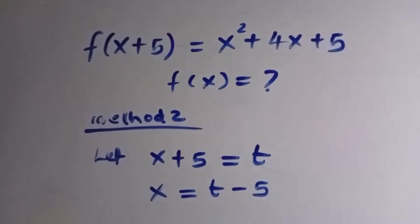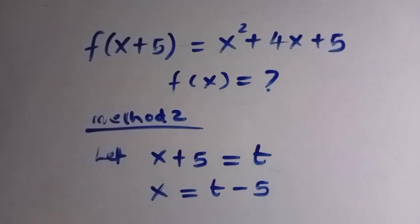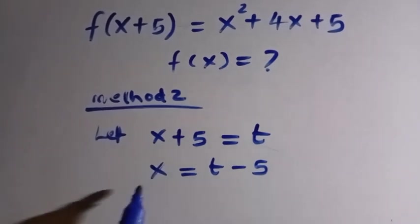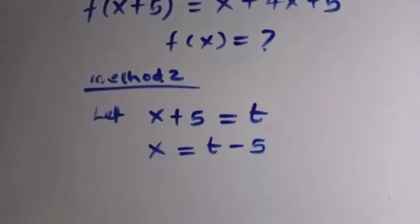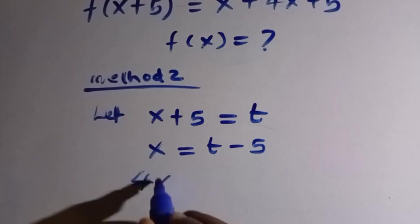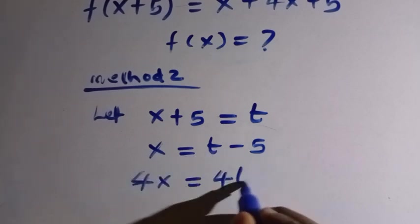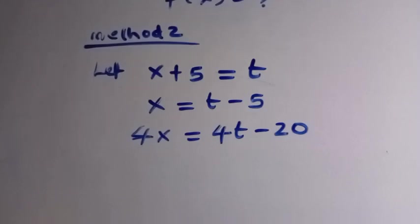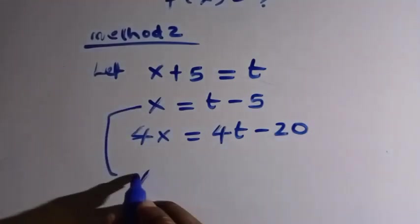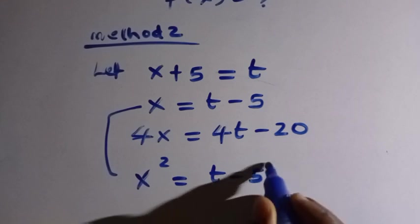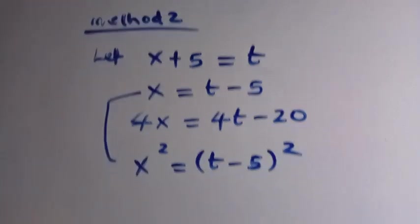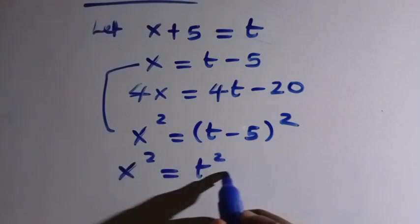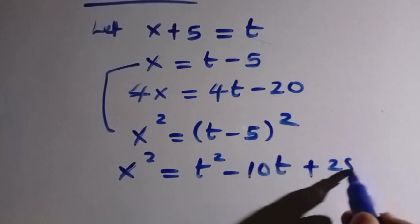From the right-hand side, we have x squared plus 4x plus 5. I need x, and x equals t minus 5. I also need 4x, so multiplying by 4 gives 4x equals 4t minus 20. And I need x squared, so x squared equals t minus 5, all squared, which expands to t squared minus 10t plus 25.